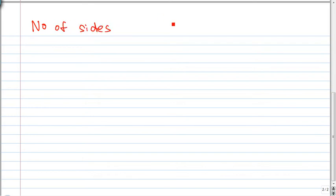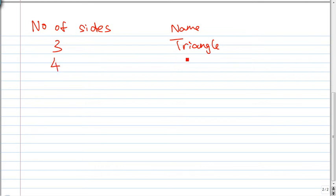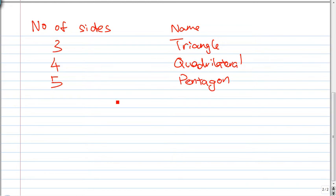Let me give you the names of the different types of polygons, named according to the number of sides they have. If a polygon has three sides it's called a triangle; if it has four sides it's called a quadrilateral; if it has five sides it's called a pentagon; if it has six sides it's called a hexagon.